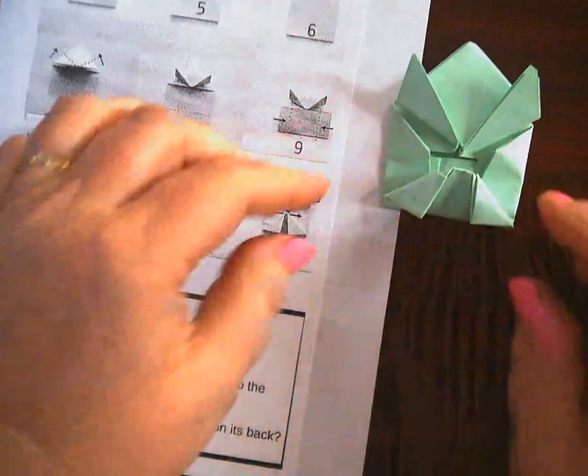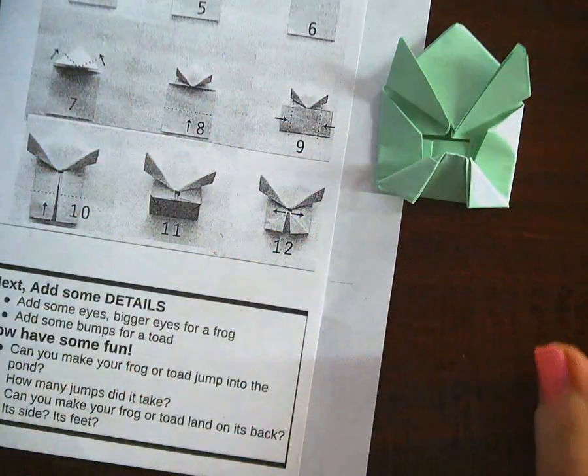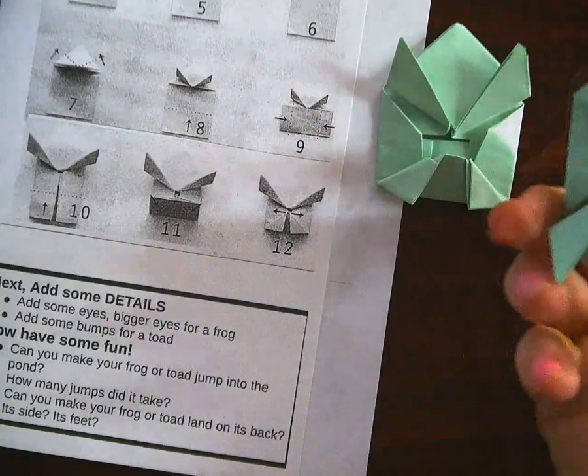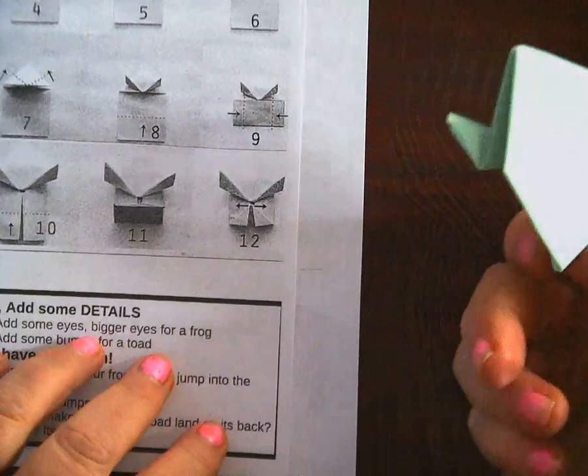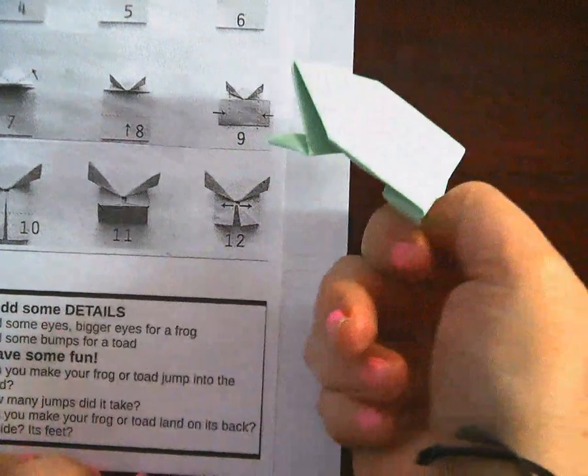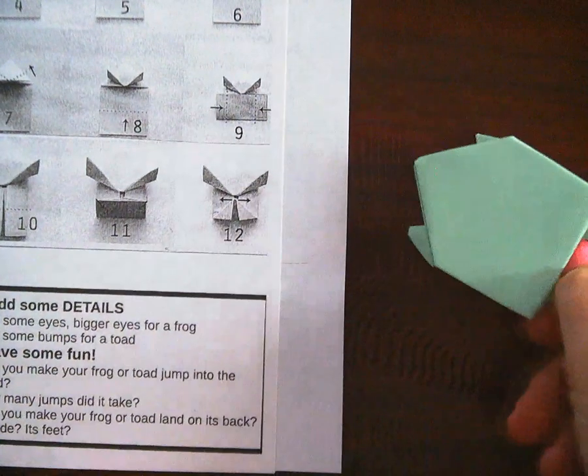Because you might have guessed that these are the front legs of the frog. And now I have just folded these two parts down and I have the back legs. You see this? There we go. And if you see how it looks like a frog, isn't that cool?